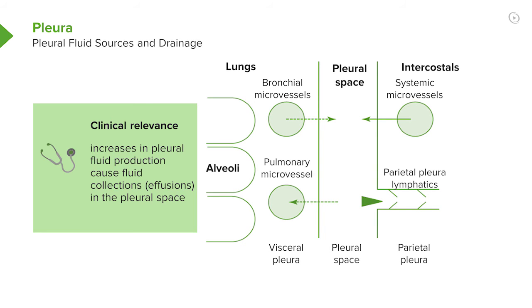When you get disease that increases the amount of fluid coming out from the bronchial intercostal circulation — such as heart failure — or that impairs the lymphatic drainage, for example if you've got abnormal pleura, then you may end up with pleural fluid accumulating in the pleural space, causing what we call a pleural effusion.